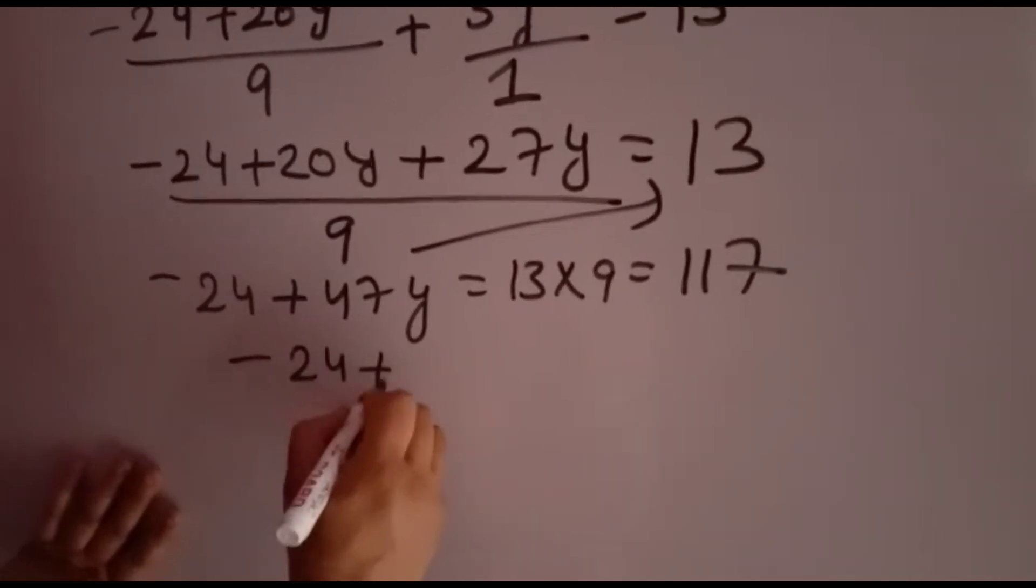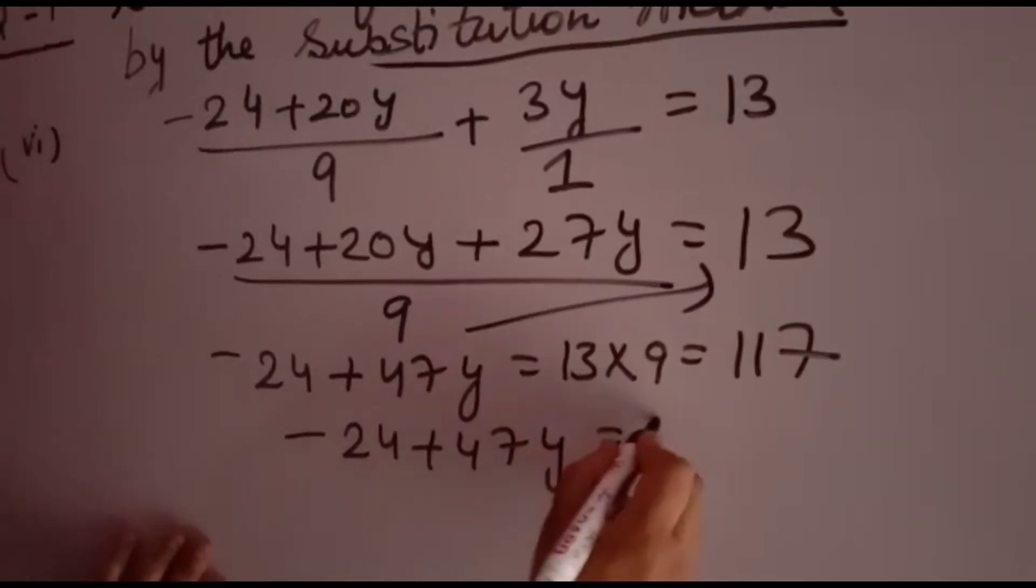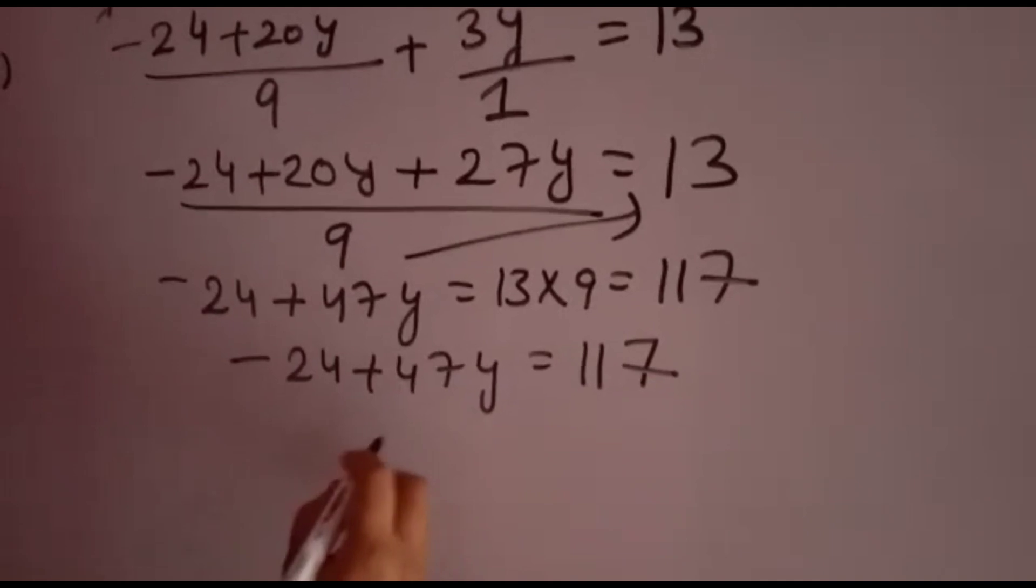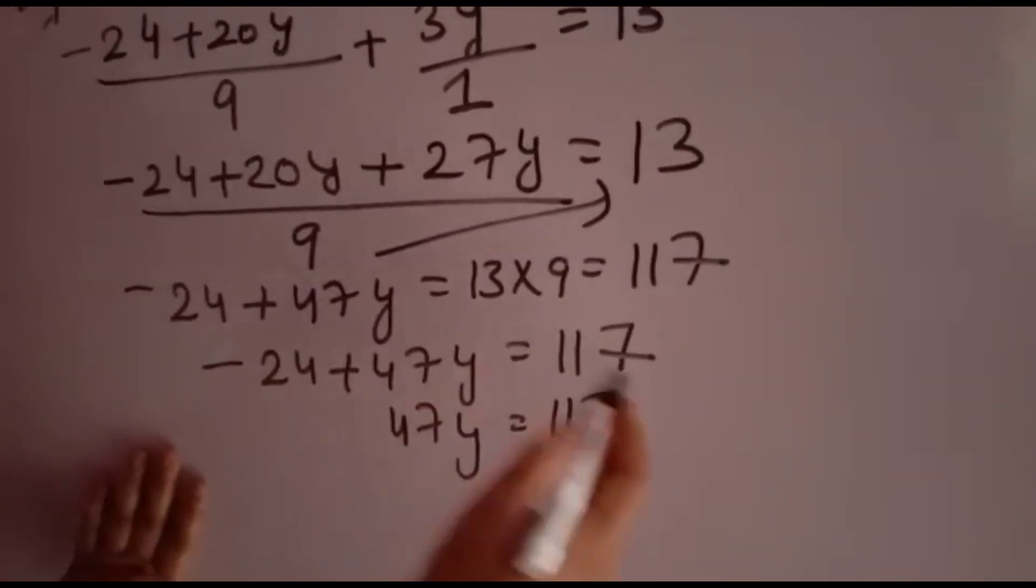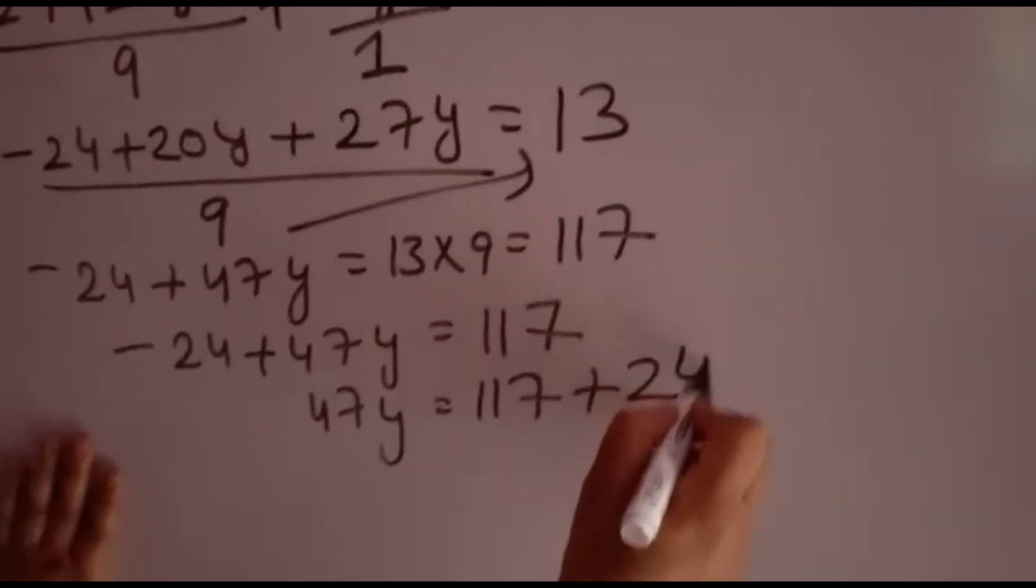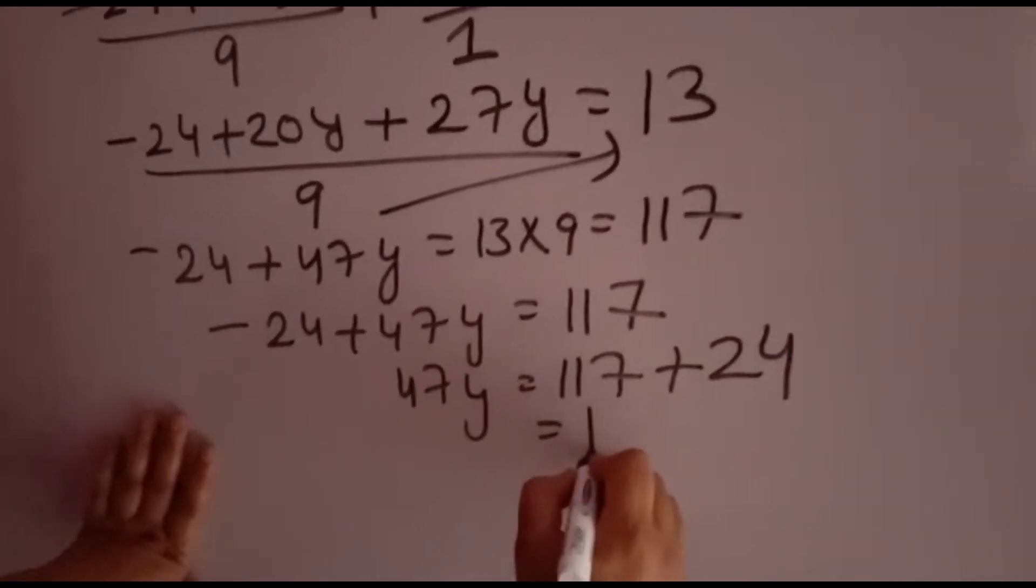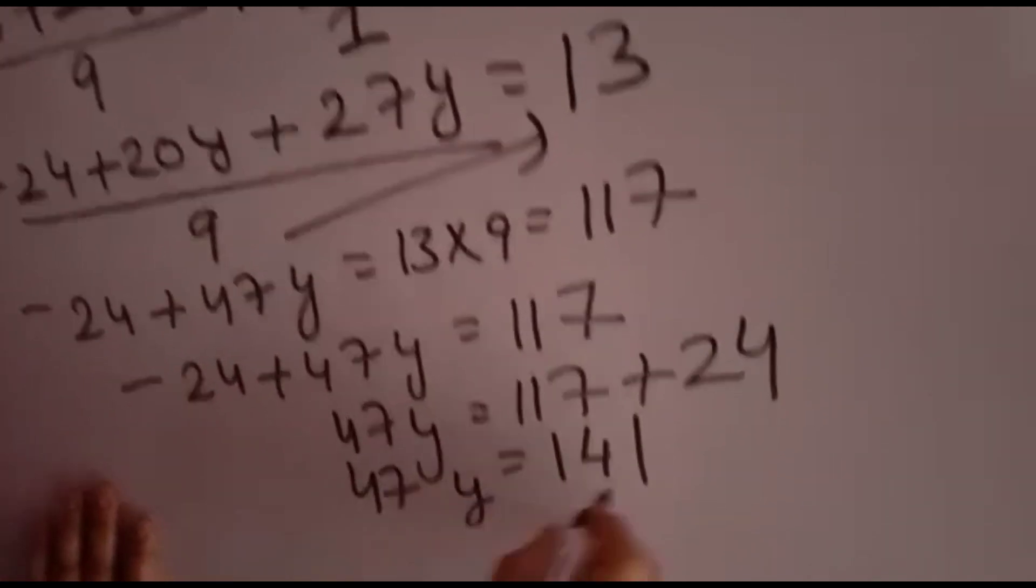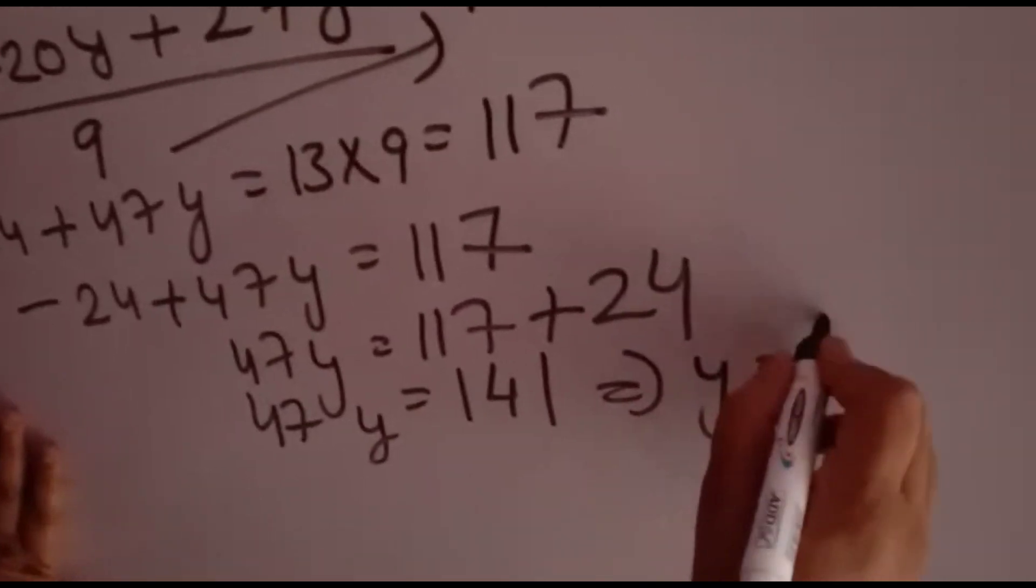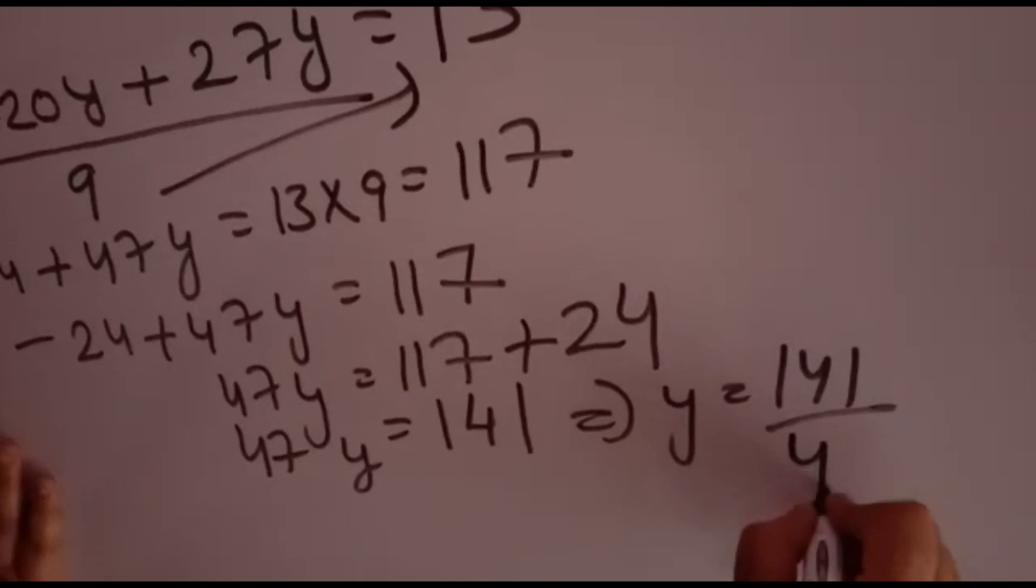So minus 24 plus 47y is equal to 117. Now 47y is equal to 117, minus 24 will go that side. It will become plus 24. So you will get here 141. So 47y is equal to 141. So y will be 141 over 47.